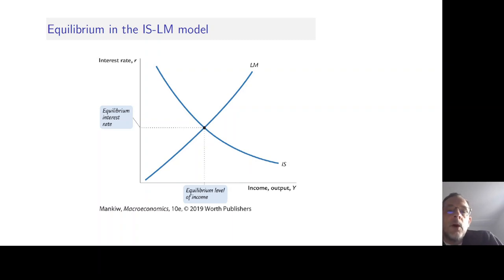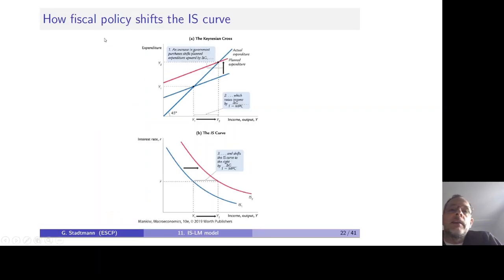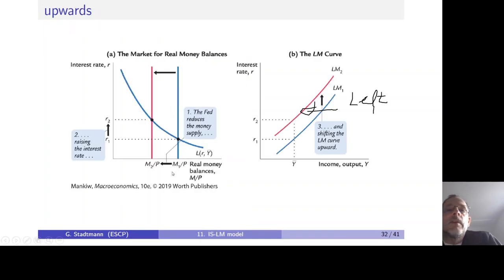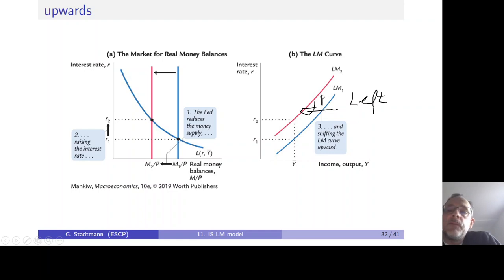We already learned that a fiscal policy — for example, an increase in government spending — will shift the IS curve to the right. We also learned that a contractionary monetary policy, where the central bank decreases money supply, will lead to the LM curve shifting either upwards or to the left.